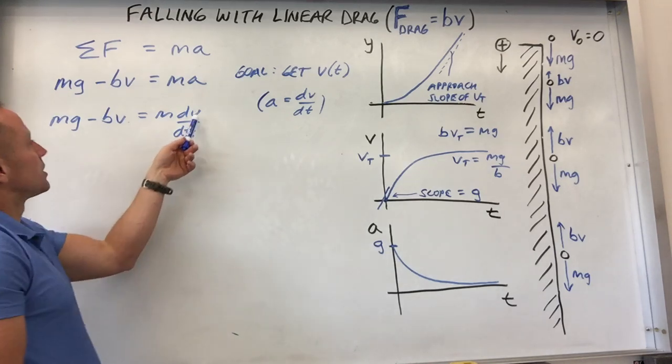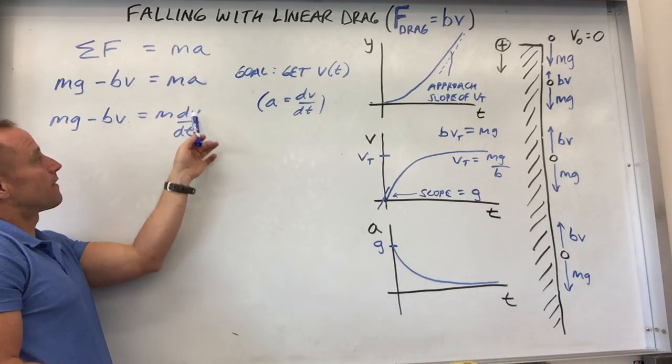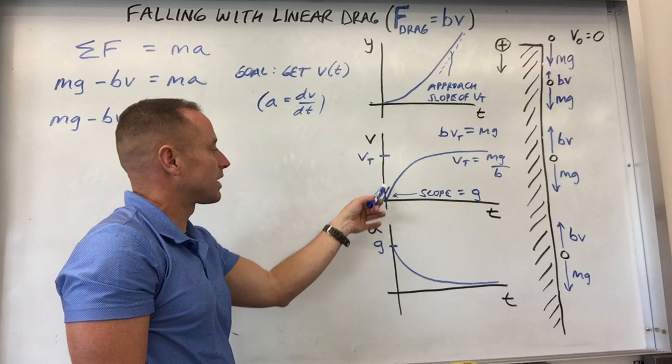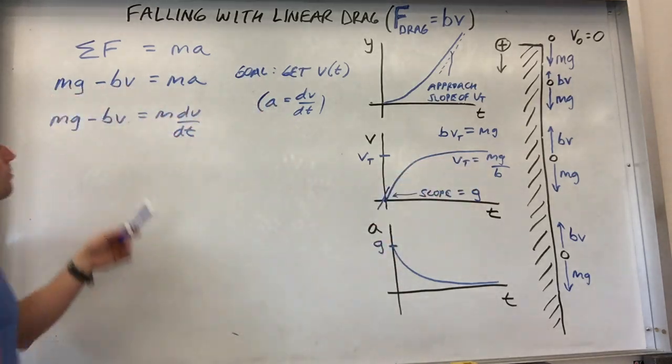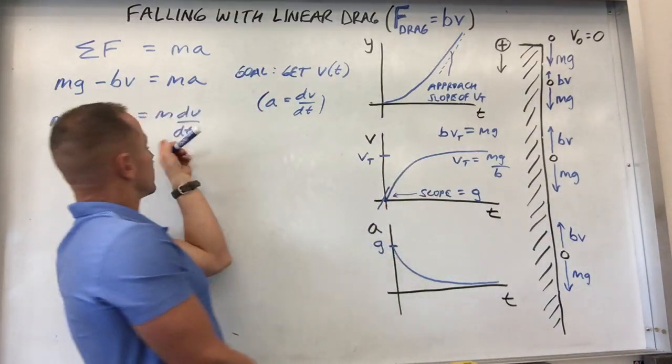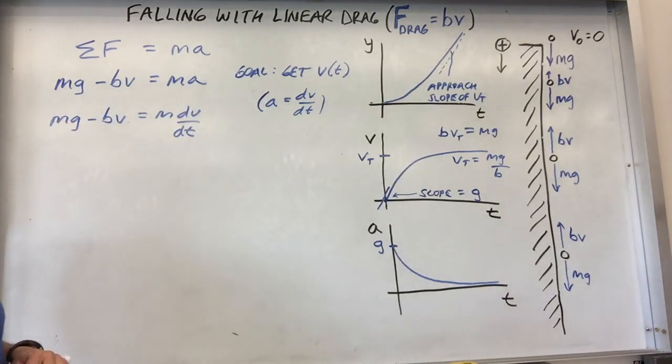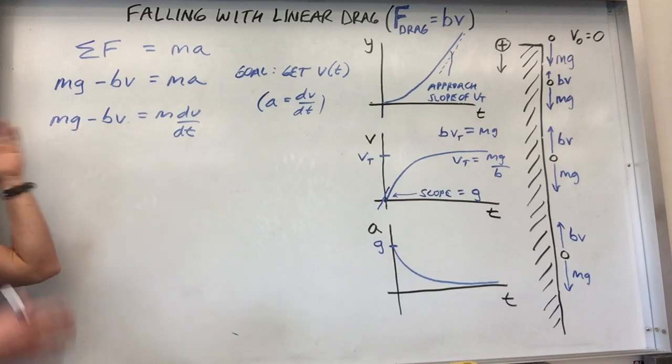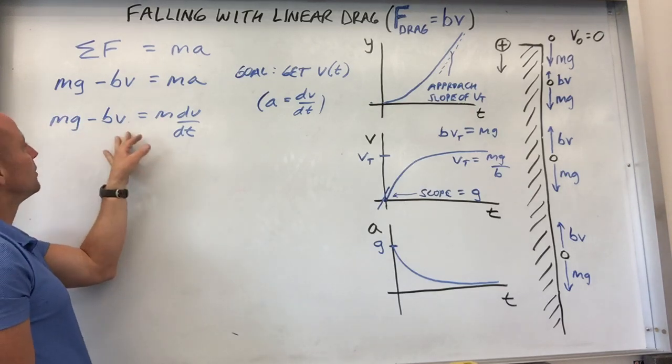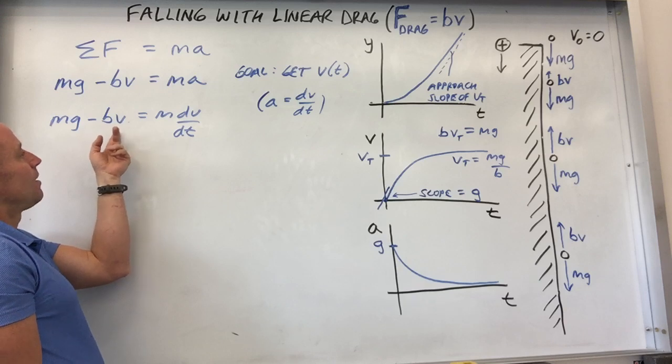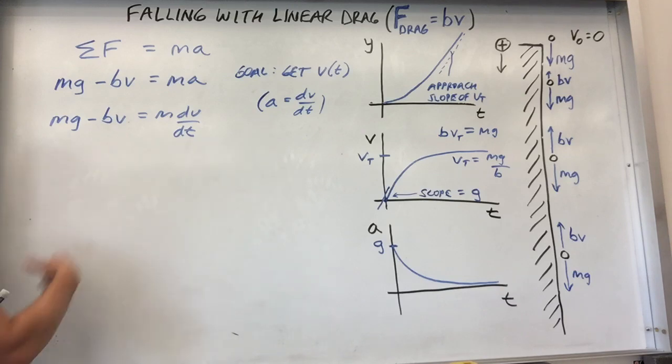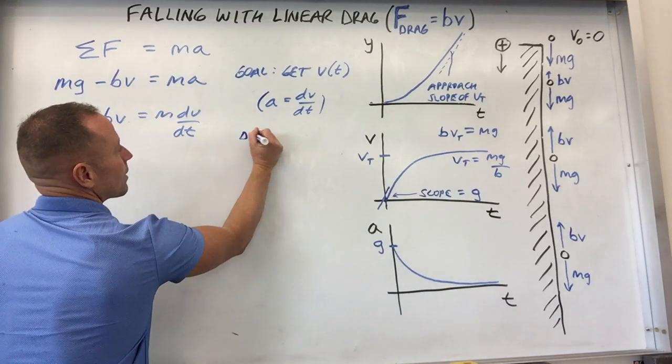So it would be nice if we could write this in terms of one particular variable. Well, thankfully, your acceleration and velocity are related. And so what you do is you make the substitution here that acceleration is the rate of change of velocity, dv/dt. So let's make that substitution. mg minus bv equals m dv/dt. This is what's called a differential equation.